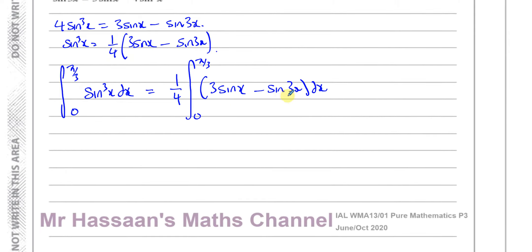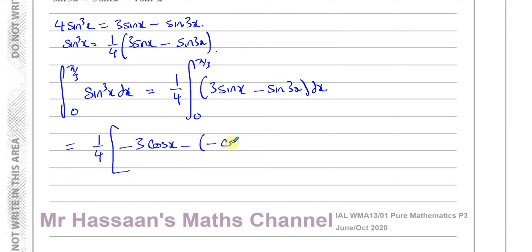So the integral between the limits of pi over 3 and 0 of sine cubed x dx is equal to the integral of one quarter times (3 sine x minus sine 3x) dx with those same limits. Now I can integrate these two terms quite easily. The integral of sine x is minus cosine x. The integral of sine 3x is minus cosine 3x over 3, because there's a function inside a function.